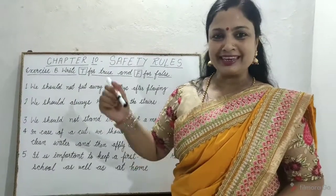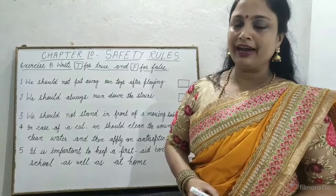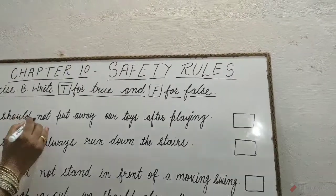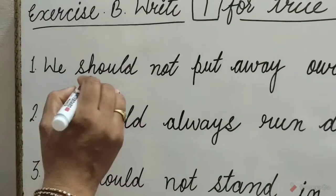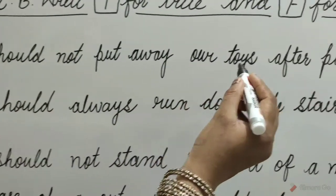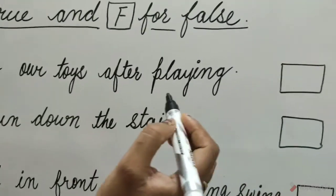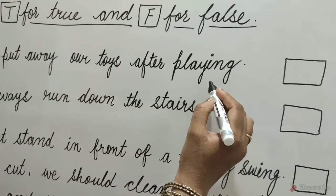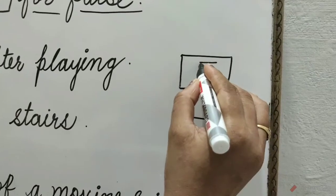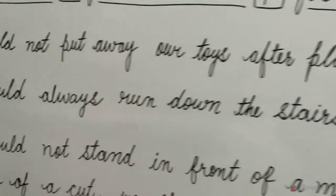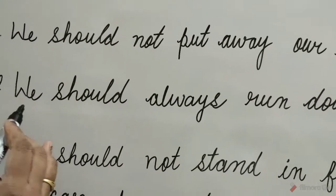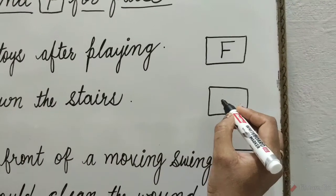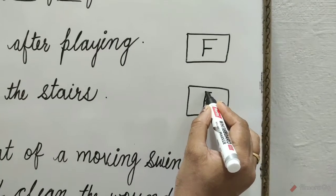Children, come to the next exercise: Write T for true and F for false. Question 1: We should not put away our toys after playing at their places. Write F in the box. Question 2: We should always run down the stairs. No children, it is very dangerous. So write F in the box.